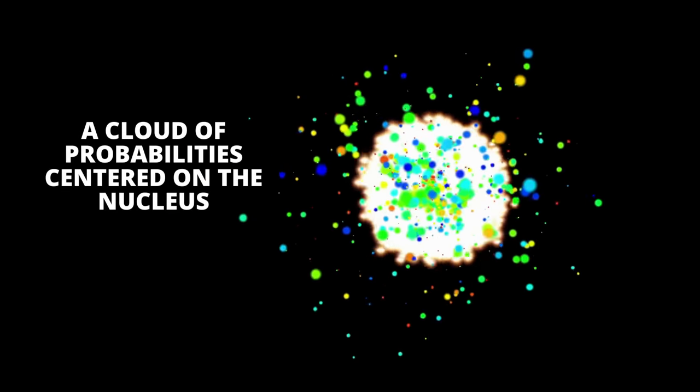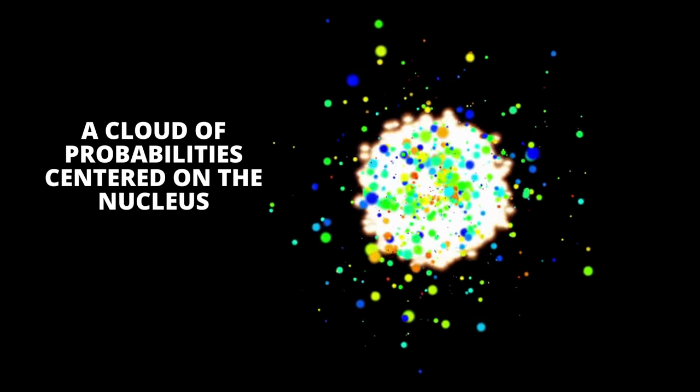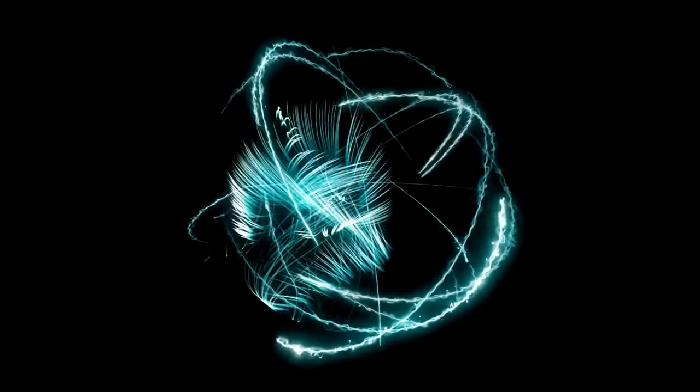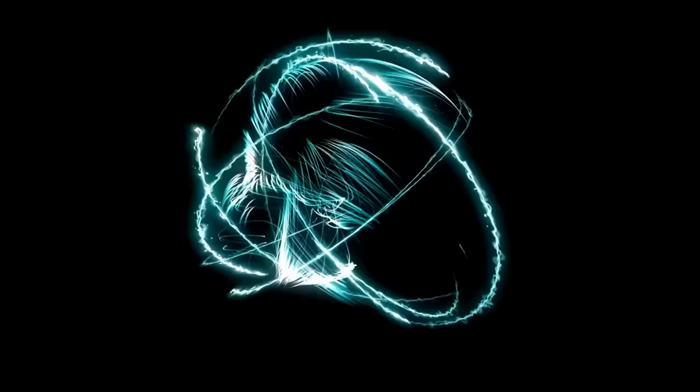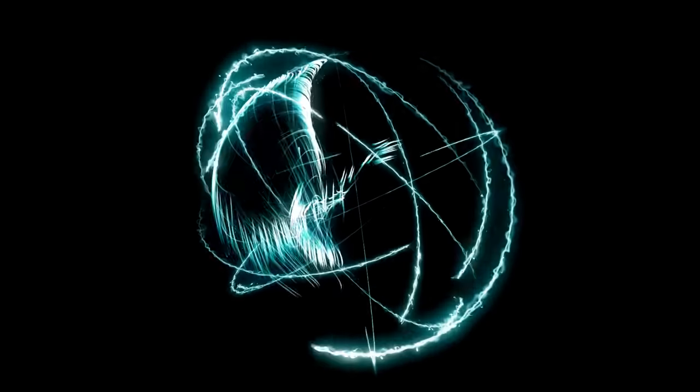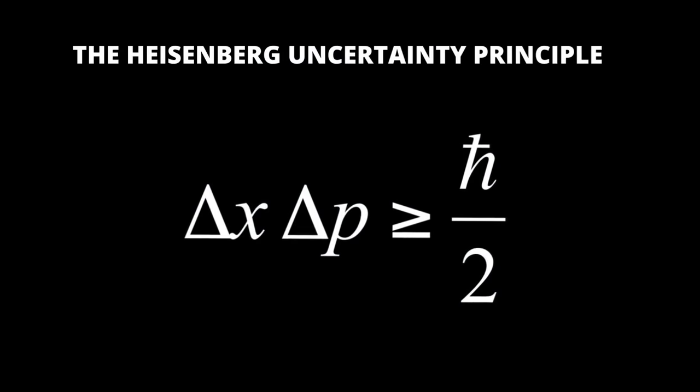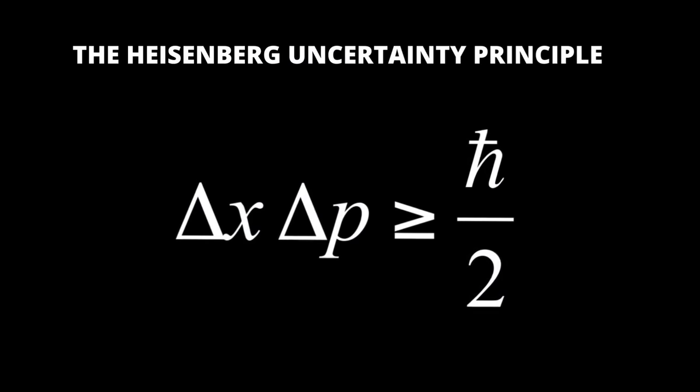Rather, we can say that the electron has a cloud of probabilities centered on the nucleus. But because the mass of the electron is very light, it spreads out beyond the nucleus. The reason why the electron is in such a diffuse state is the Heisenberg uncertainty principle.